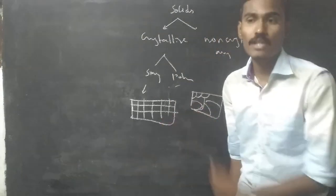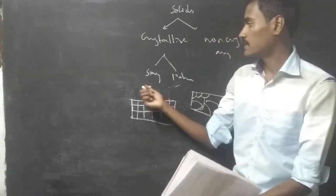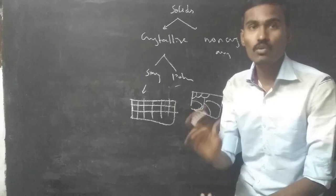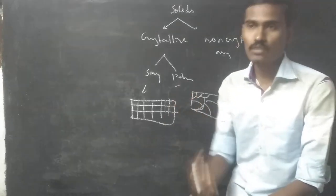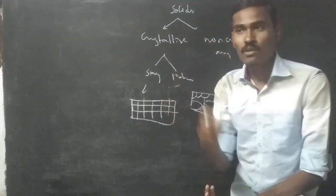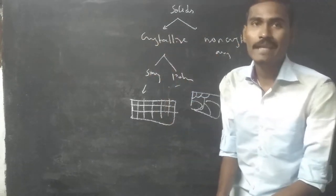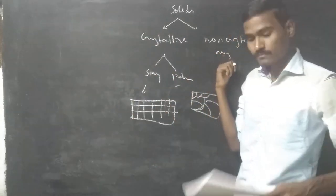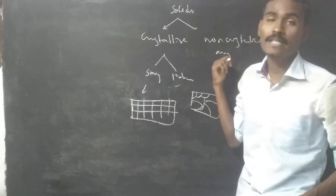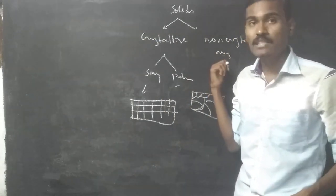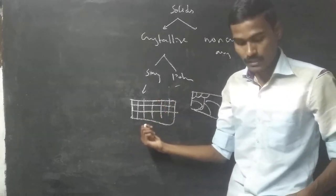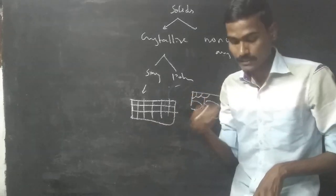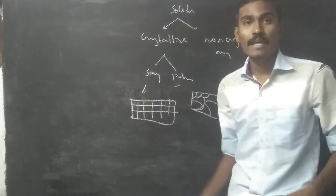Crystalline materials have a regular periodic arrangement. Non-crystalline materials include glass, plastics, and rubber. Examples of single crystals are quartz and mica. Examples of polycrystalline materials are metals and ceramics.